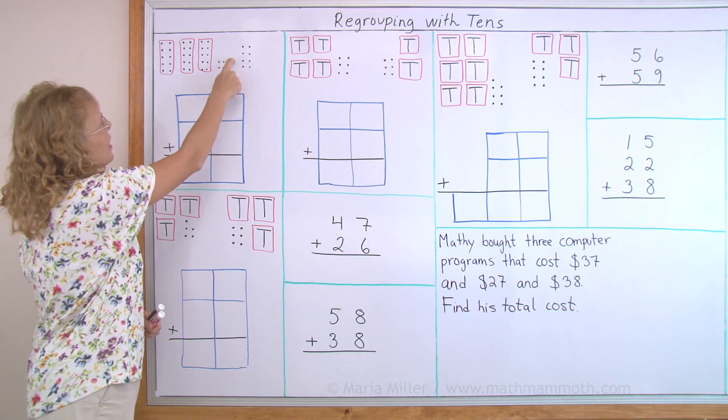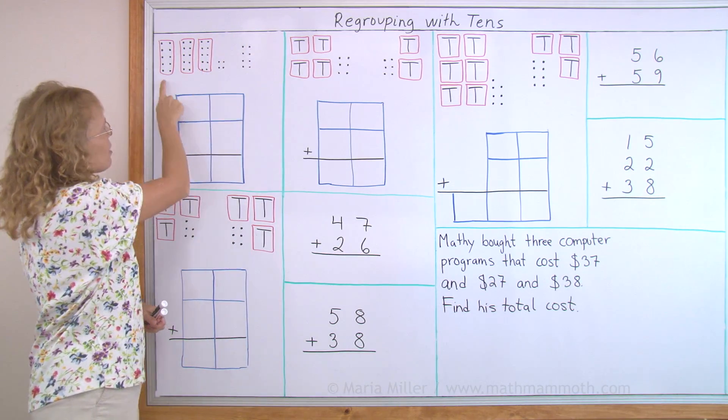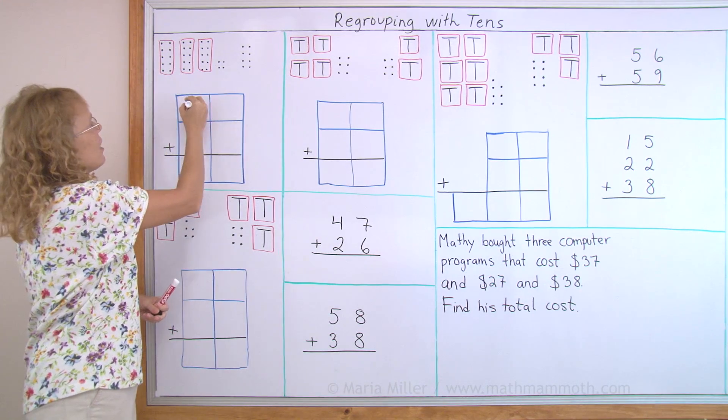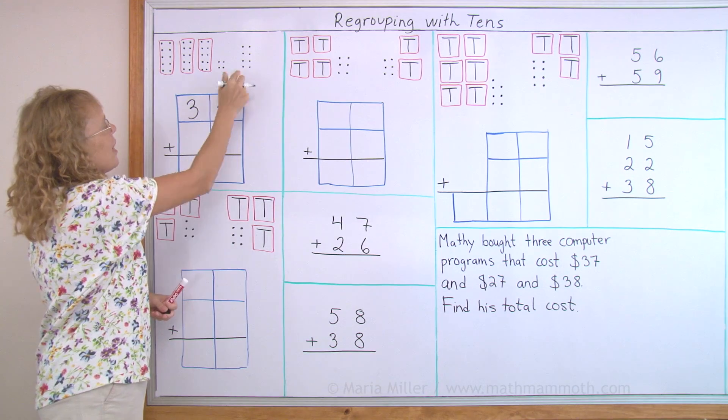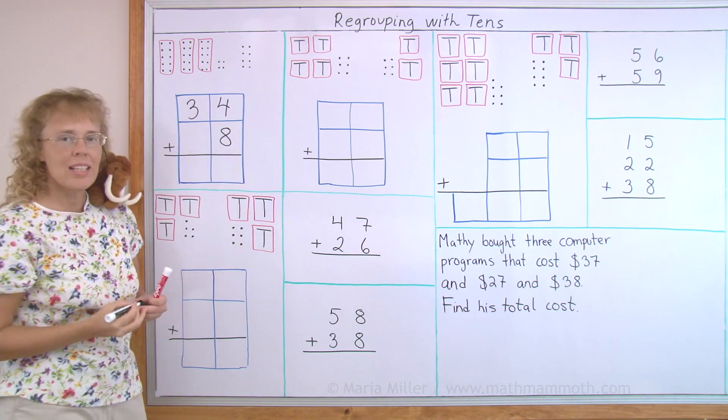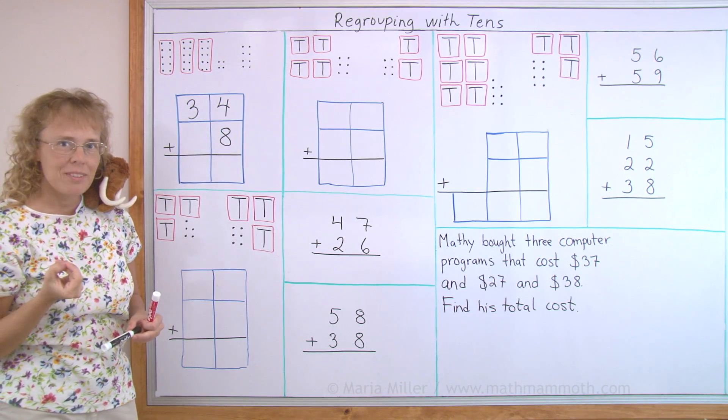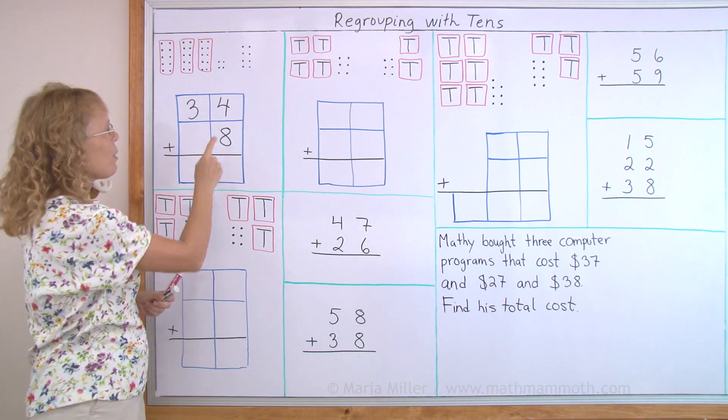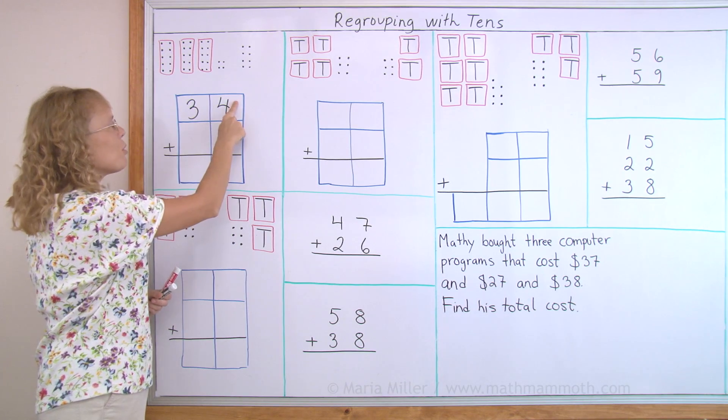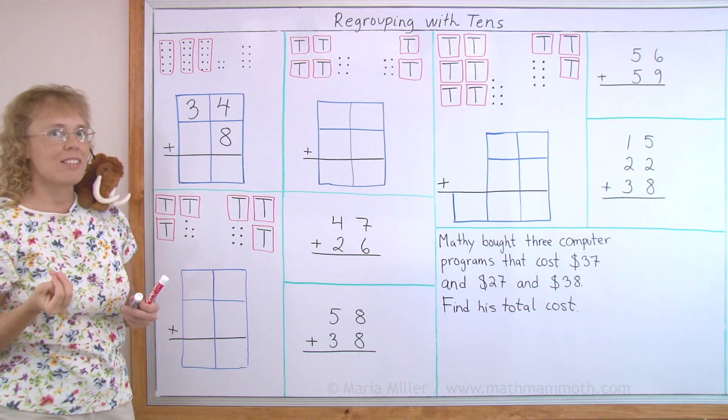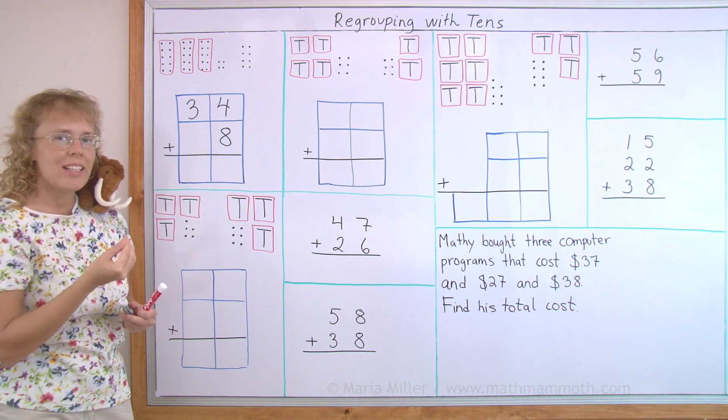Let's say we are adding this here and this here. In other words, three tens and four, or thirty-four, and I'll write it here, and then we are adding eight. Now you can see that from this four and eight we can make a new ten. And the way we see it here is we have four and eight, and we add four plus eight equals twelve. So that is one ten and two.